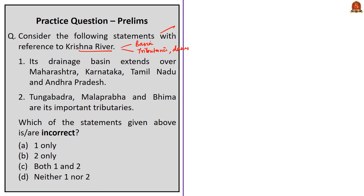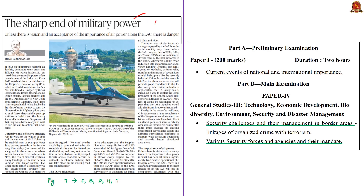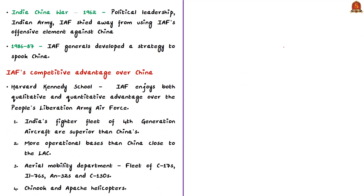The next discussion is based on an OPED article written by a retired Air Vice Marshal from the Indian Air Force, analyzing the efficiency and competitive advantage of the Indian Air Force over China's People's Liberation Army Air Force (PLAAF). The author mentions how India suffered defeat in the 1962 war when political leadership and the armed forces held back from using the IAF's offensive element against China. The author also mentions a 1986–87 incident where the IAF developed a strategy near Tawang in Arunachal Pradesh that could have frightened China with numbers, firepower, and aggression without confrontation.